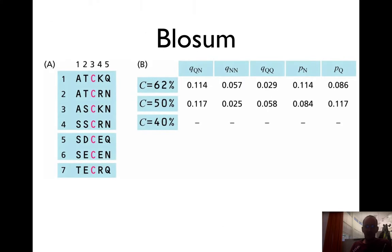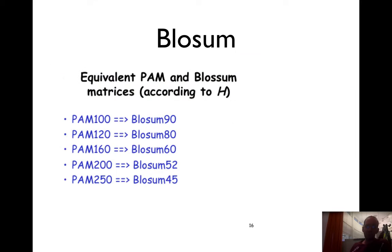There are also matrices, as we calculate them from different types of blocks to align. Here we have the blocks, and we calculate the probabilities, and we can obtain all those matrices. And as a rough guide, the PAM 250 is about BLOSUM 45, PAM 160 is BLOSUM 62, and BLOSUM 80 is PAM 120.